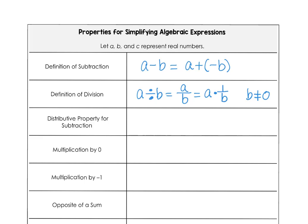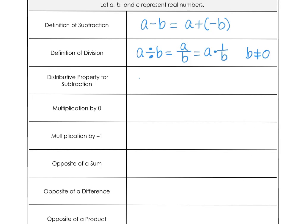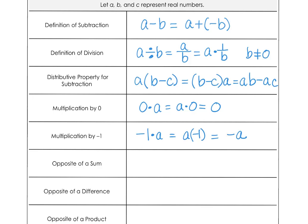Distributive property over subtraction would appear as A times the quantity B minus C, and you could write that backwards as B minus C times A. In either case, we would have AB minus AC. Multiplication by 0, 0 times A, or A times 0, no matter which order, will produce 0. Multiplication by negative 1 can be negative 1 times A, which we would say the opposite of A, or A times negative 1. In either case, we would get the opposite of A.